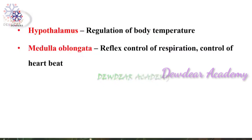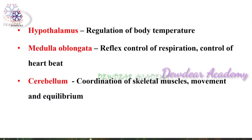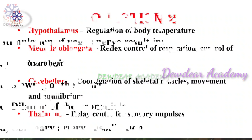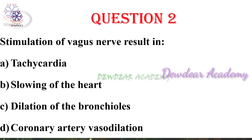Cerebellum is concerned with the coordination of skeletal muscle movement and equilibrium. Thalamus is considered as the relay center for sensory impulses. So here the question was temperature regulatory center and the answer is hypothalamus. Now second question: Stimulation of vagus nerve results in — options: tachycardia, slowing of the heart, dilation of bronchioles, coronary artery vasodilation.